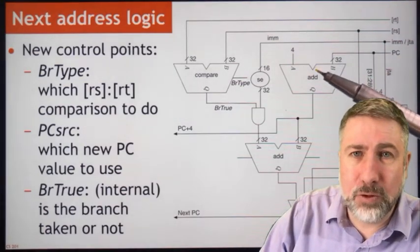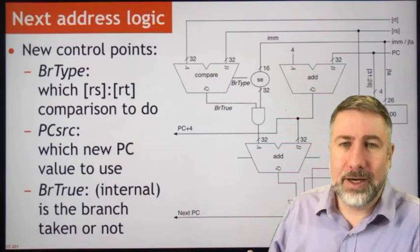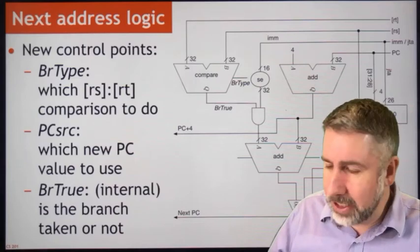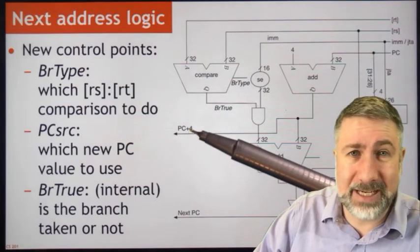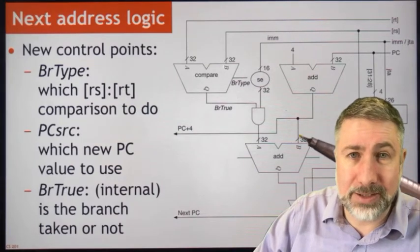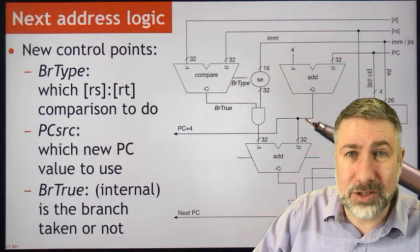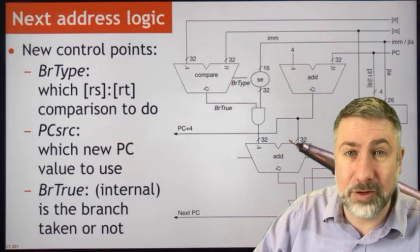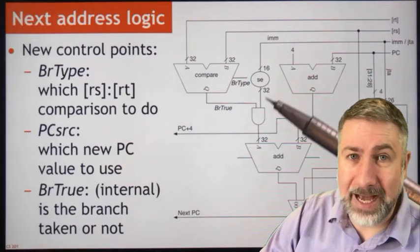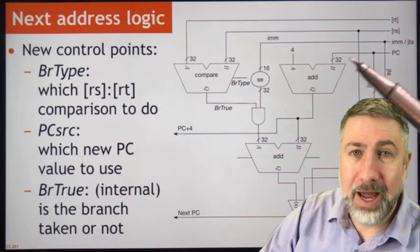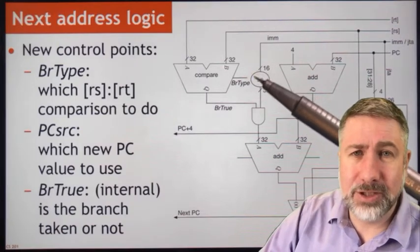For branch instructions, the first thing we do is add four to the program counter — this happens every time because the next address is most often just PC plus 4. That's also the value stored when doing a jump and link. It's a simple adder. That value is presented as-is for jump and link, but is also used as the base for the rest of the branch addition. Then we're going to add an immediate value that's sign-extended and shifted.